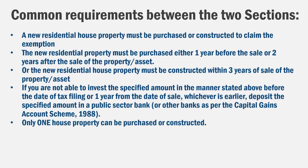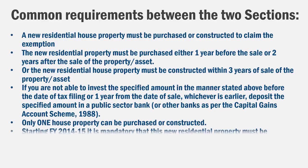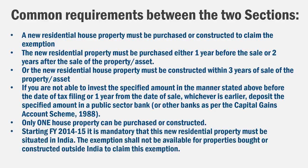The fifth condition is that you must buy only one house property — you cannot claim exemption by buying multiple properties. There were some case laws where two adjoining houses were treated as one, but generally only one house qualifies. The sixth condition is that the property must be located in India — buying a flat abroad, like in Dubai, will not qualify for the exemption.